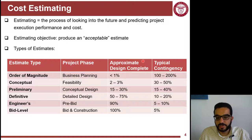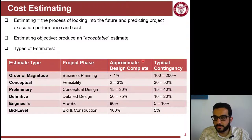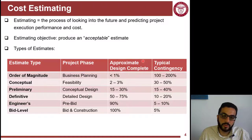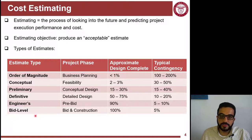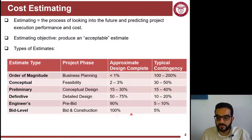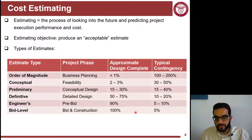There are six types of estimates, starting with the least accurate one: the rough order of magnitude. It fits well when you don't have a lot of data. Then you go through different levels of design — conceptual estimate, then preliminary, then definitive, then the engineer's estimate — and finally you end up with the bid level estimate. The bid estimate is done mainly by construction folks submitting bids to win projects, so it should have a lot of detail available after you have the design package.